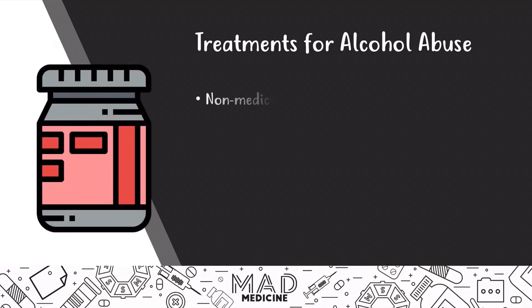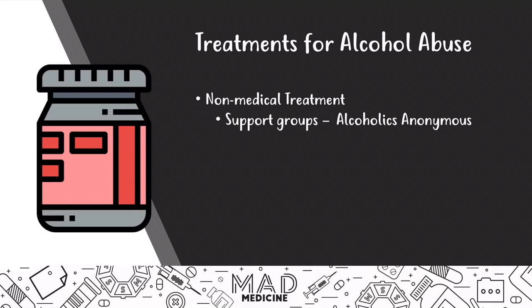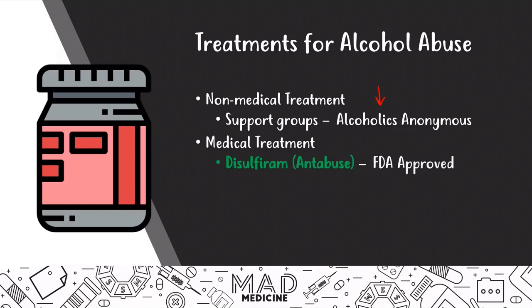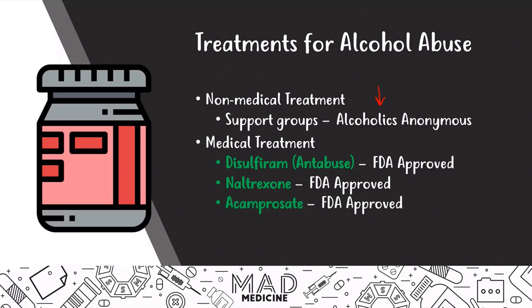There are several treatments, mainly non-medical and medical. Non-medical treatment includes support groups, primarily Alcoholics Anonymous, which is very effective at making patients feel comfortable and addressing their addictive issues. You may get a Step question about this — the best long-term treatment combines medical treatment with non-medical support groups like Alcoholics Anonymous. For medical treatment, there are three main FDA-approved drugs you need to know: disulfiram, naltrexone, and acamprosate.